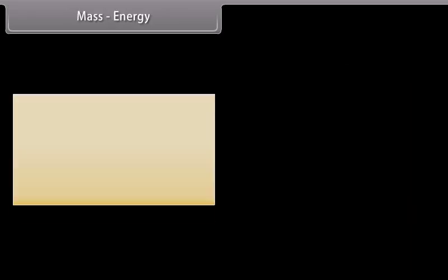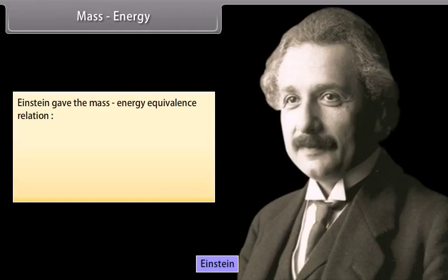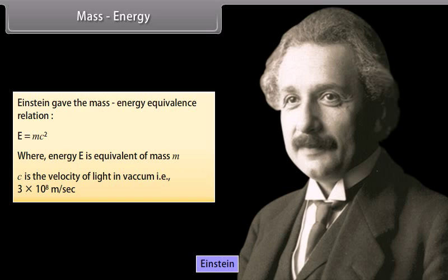Mass energy. Einstein gave the mass energy equivalence relation E is equal to MC square, where energy E is equivalent of mass M, C is the velocity of light in vacuum that is 3 into 10 raised to the power 8 meter per second.